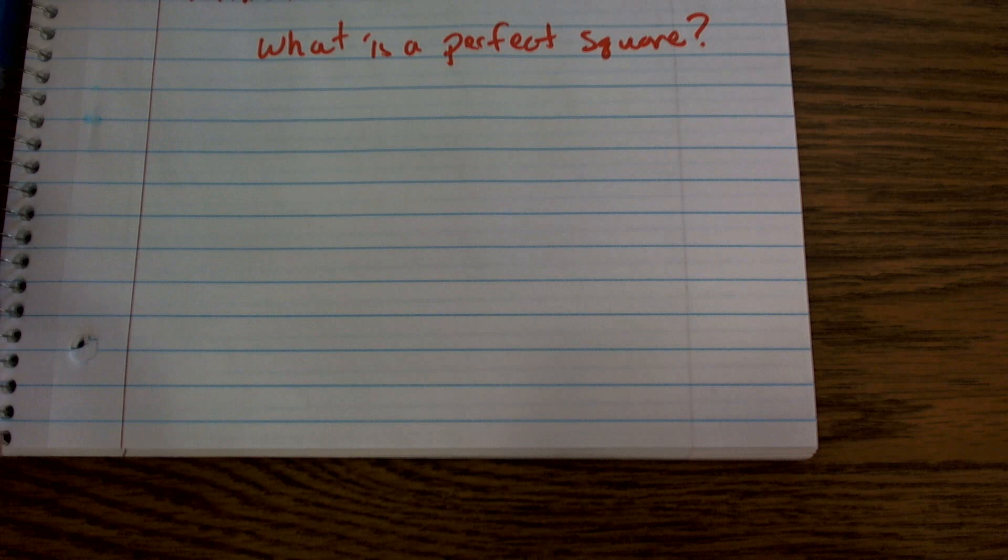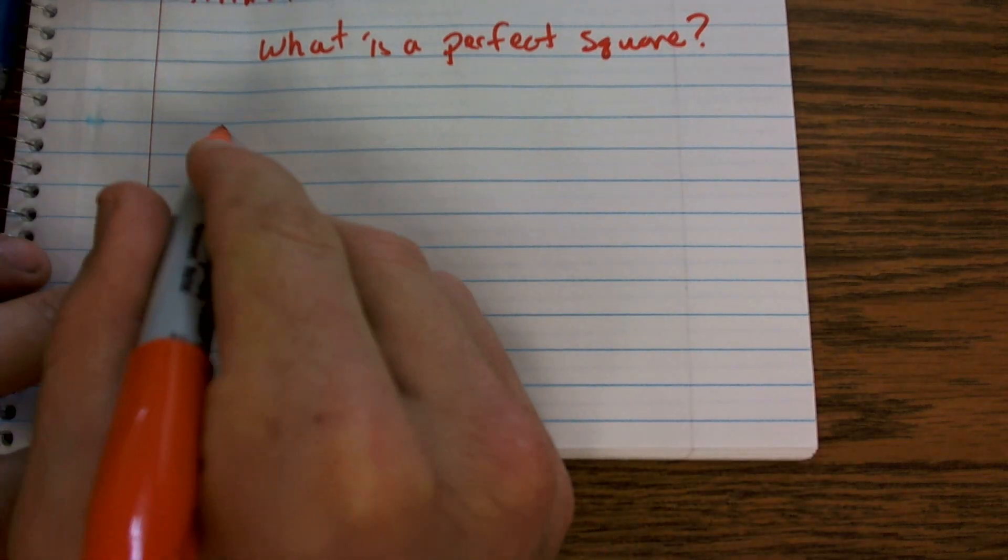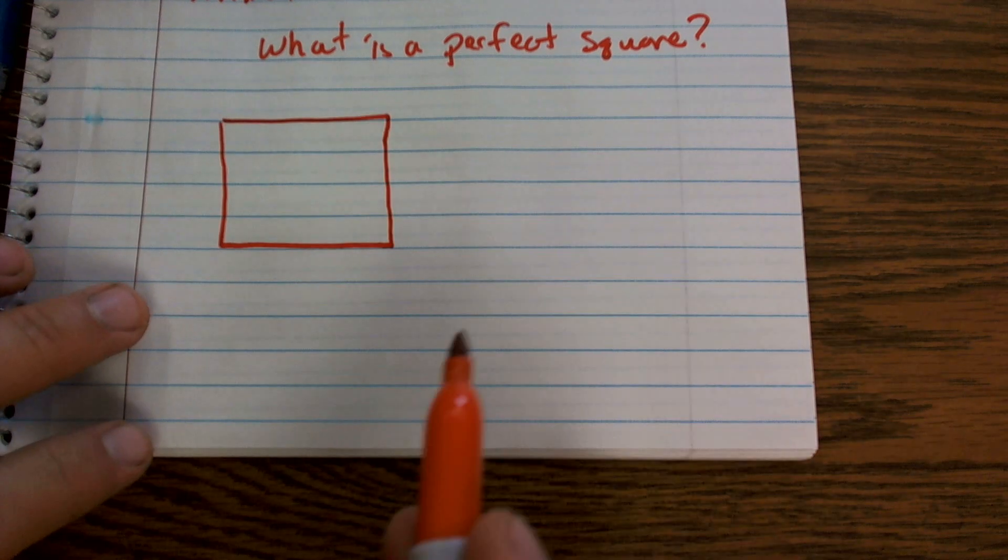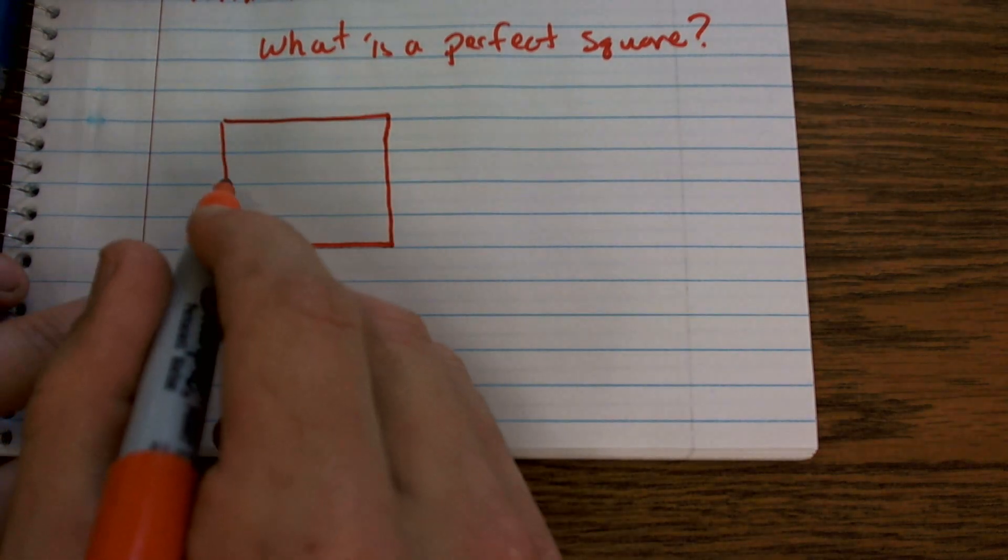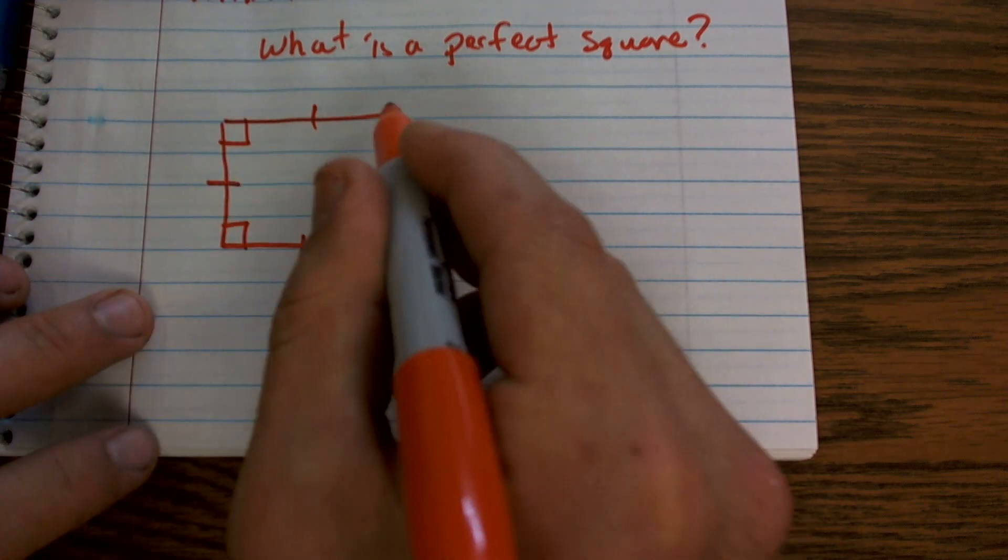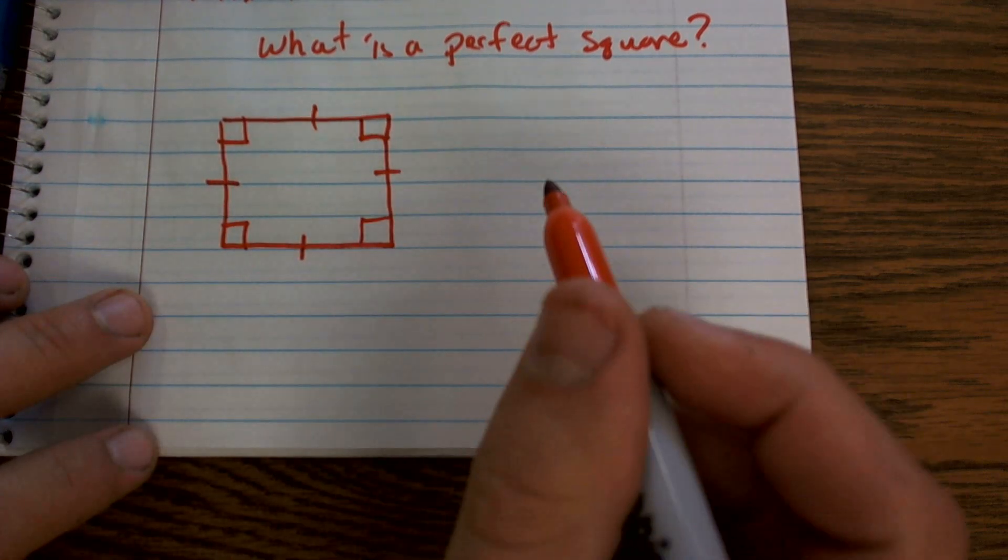What I want to do is let's just think about what exactly is a square. So a square is a four-sided figure that has four equal lengths and four 90-degree angles.